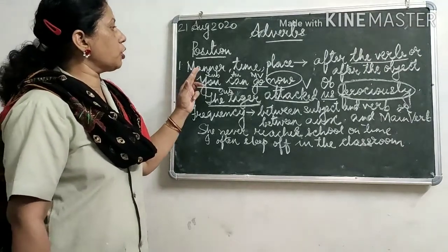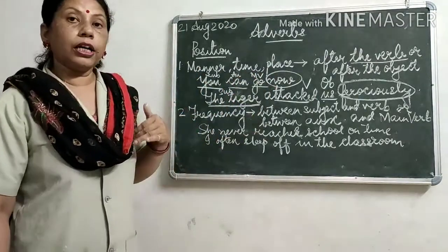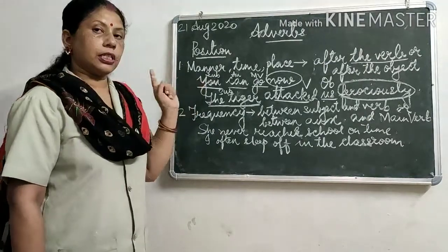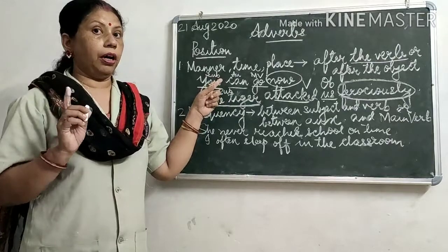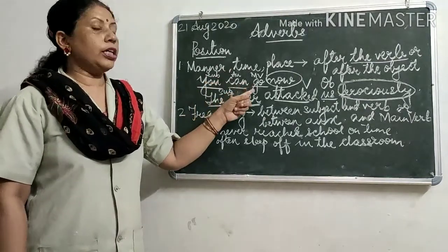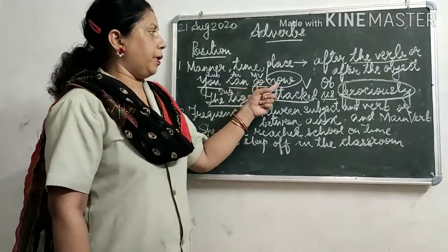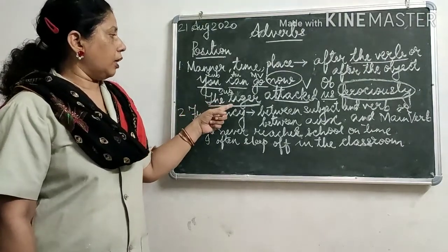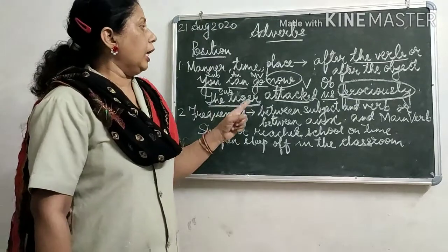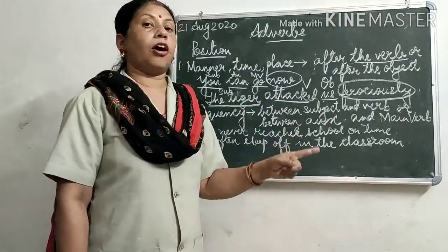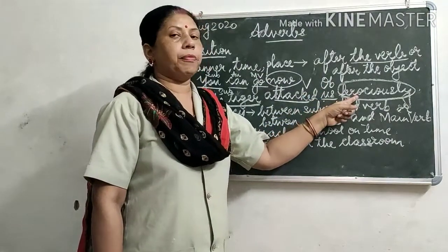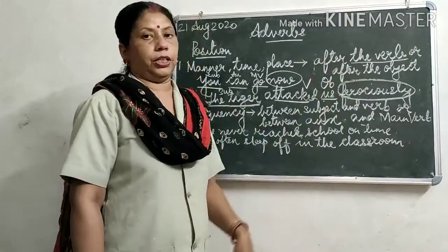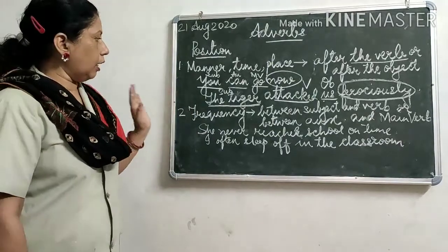So to recap: in 'You can go now,' there is no object, so the adverb is placed after the verb. In 'The tiger attacked us ferociously,' 'us' is the object, so the adverb 'ferociously' is placed after the object. I hope the first rule is clear.